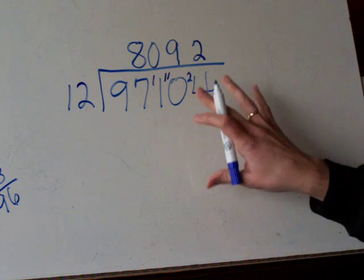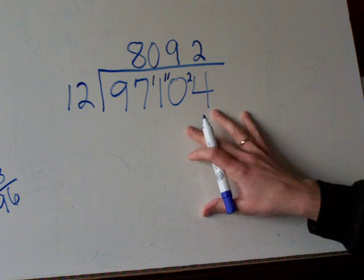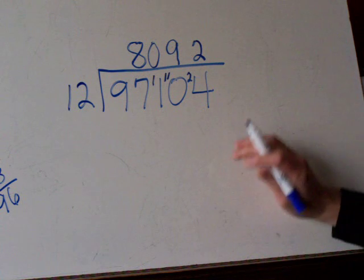12 goes into 24 twice. And, of course, if you had a number that it didn't go into evenly at the very end, you could write your remainder like you normally would with a long division problem.